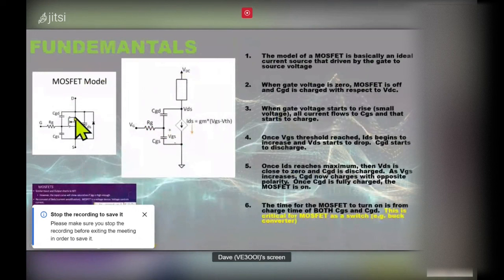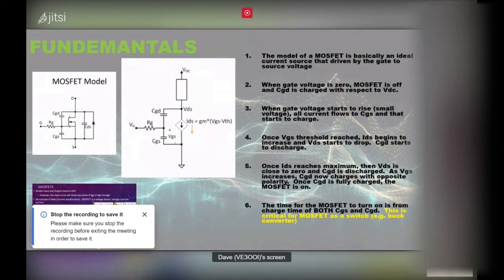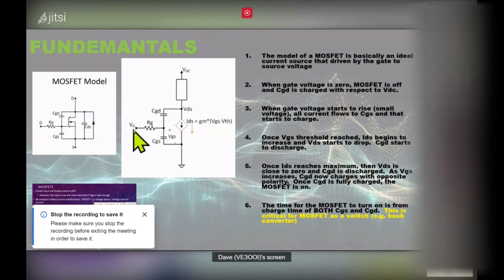The MOSFET's AC model is a current source driven by the gate voltage via the transconductance parameter gm. Once the gate voltage exceeds the threshold voltage, current starts to flow; below threshold there's essentially no current. I talk about how the transistor tracer calculates gm and related parameters in a separate video if you want more detail on that.